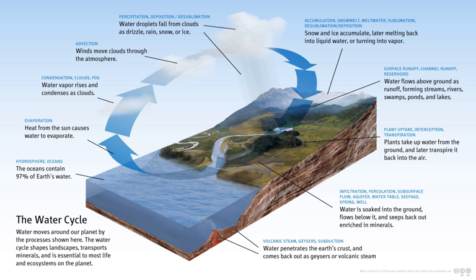The water cycle, also known as the hydrologic cycle or the hydrological cycle, describes the continuous movement of water on, above and below the surface of the Earth. The mass of water on Earth remains fairly constant over time but the partitioning of the water into the major reservoirs of ice, fresh water, saline water and atmospheric water is variable depending on a wide range of climatic variables.